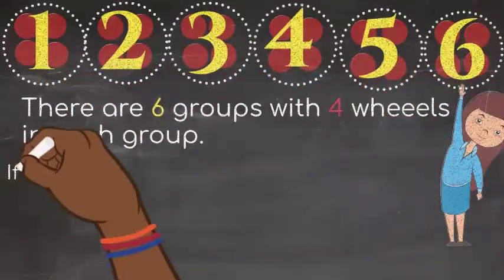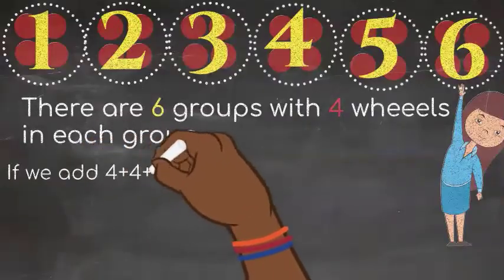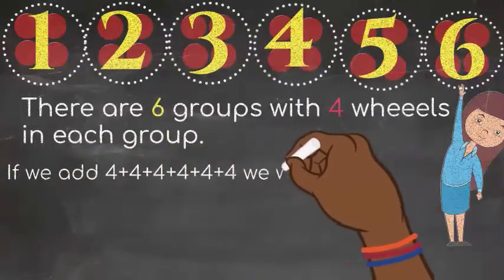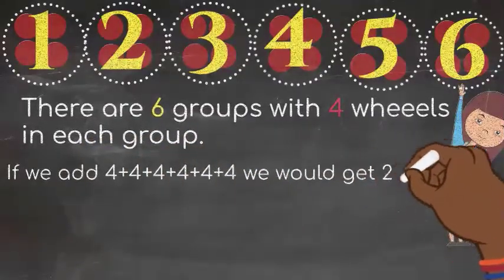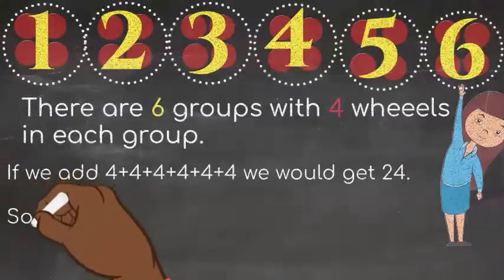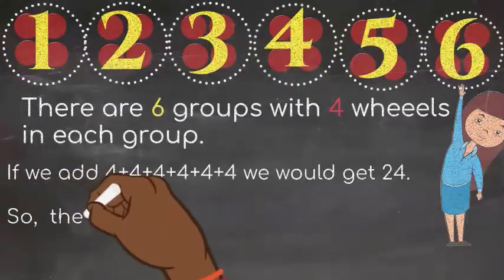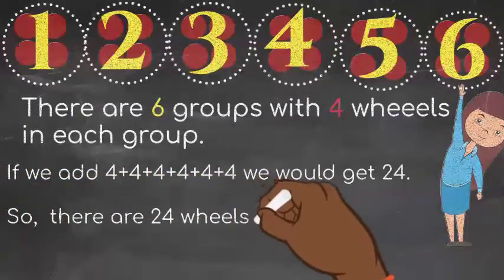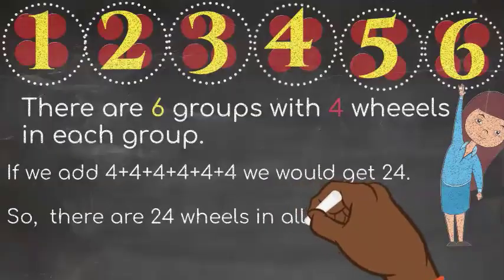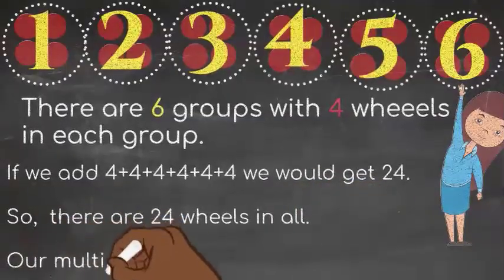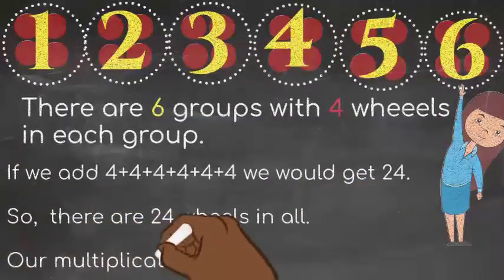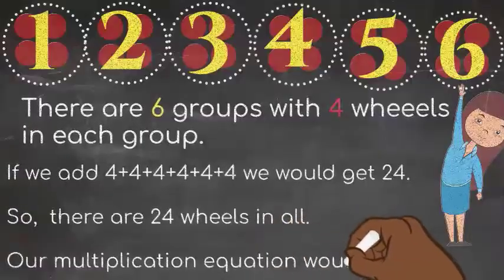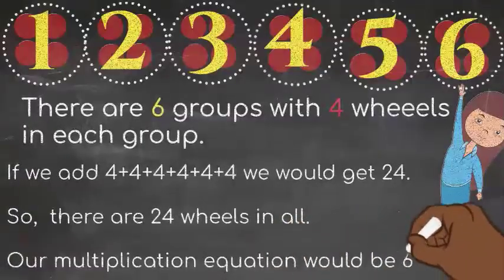If we add 4 plus 4 plus 4 plus 4 plus 4 plus 4, we would get 24. So there are 24 wheels in all. Our multiplication equation would be 6 times 4 equals 24.